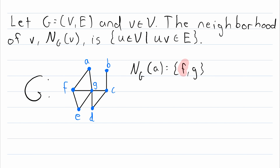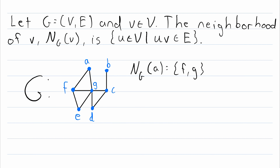In this case, since it's obvious we're talking about this graph, we could just leave off the subscript G — it's not completely necessary. You only really need to use that subscript if you're talking about multiple graphs at the same time and you want to make sure you're clear about which graph you're talking about.